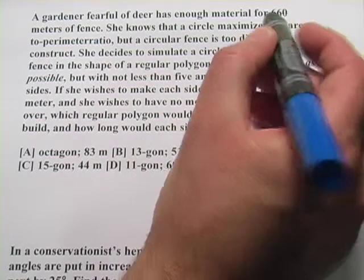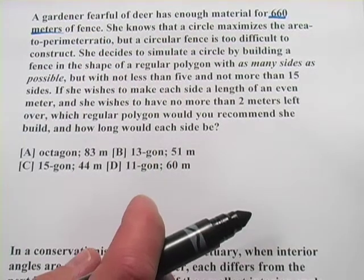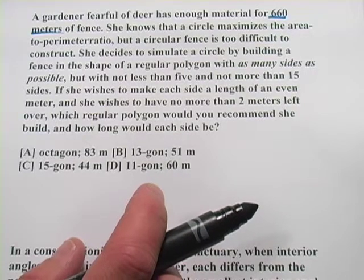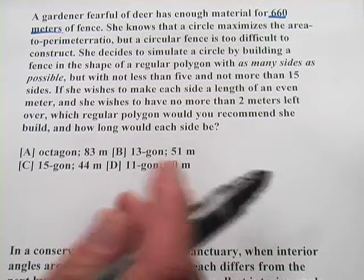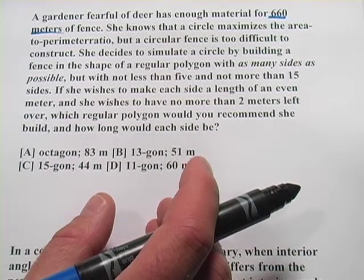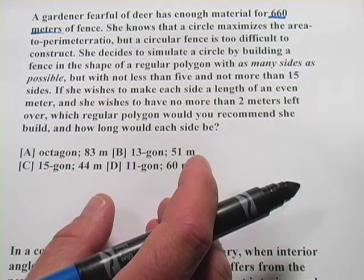A gardener has 660 meters of fencing and she wants to enclose the most area that she can. The thing to know is when you're trying to enclose the most area, a circle is the most efficient shape for that. Way better than a square or some other kind of polygon.